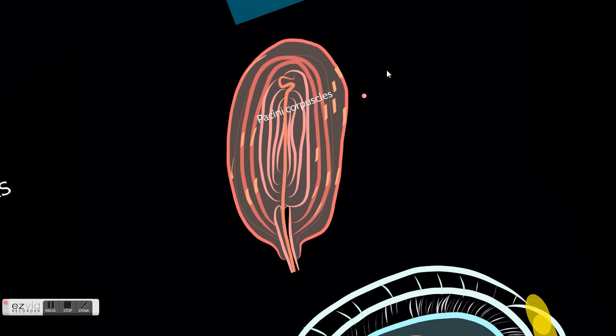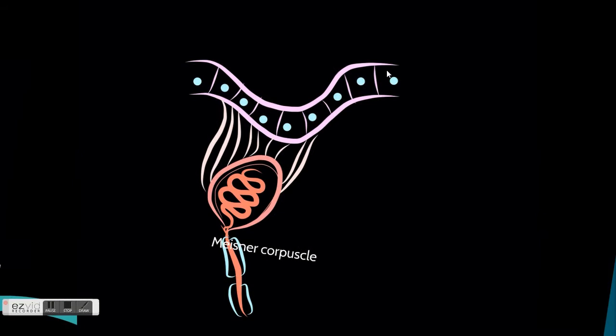The other ones are Meissner corpuscles, which consist of spirally coiled nerve endings surrounded inside a collagen capsule. They participate in the identification of form and texture of things, and detect 10 to 200 Hertz.